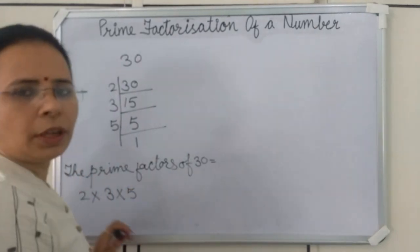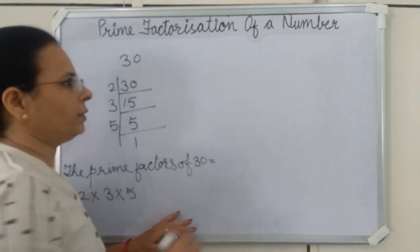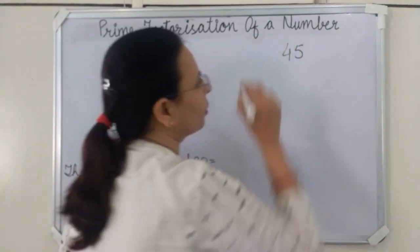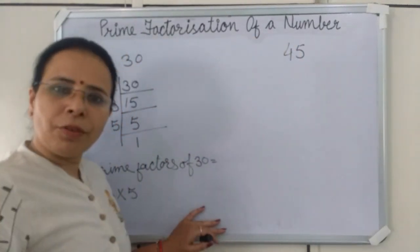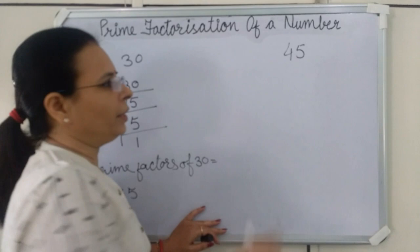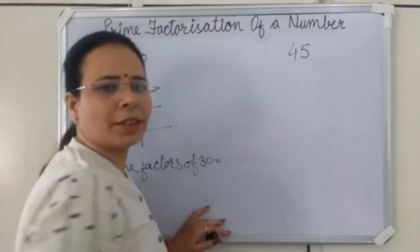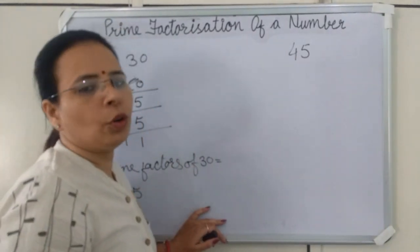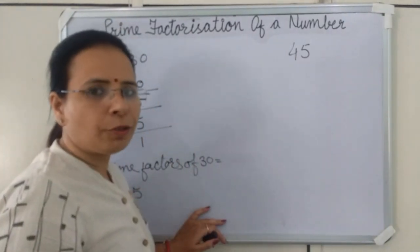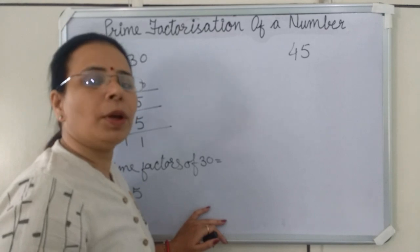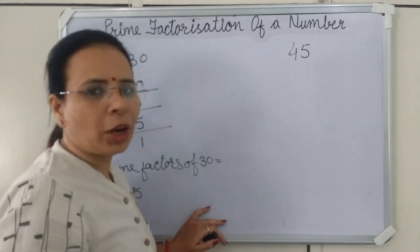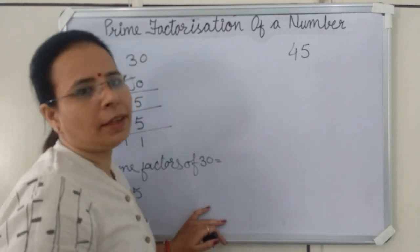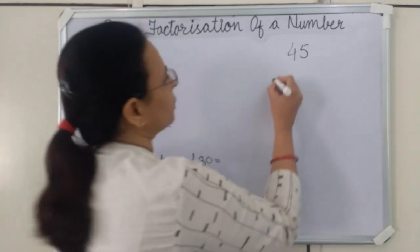Now we will see one more example. We have to find the prime factors of 45. We will divide 45 by the smallest prime number that exactly divides it.